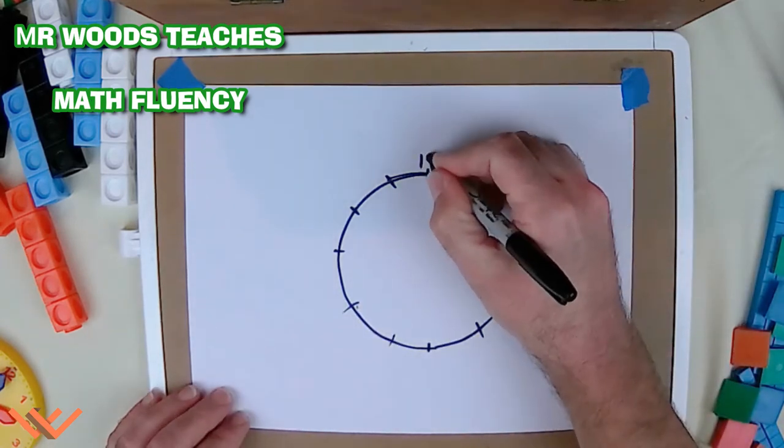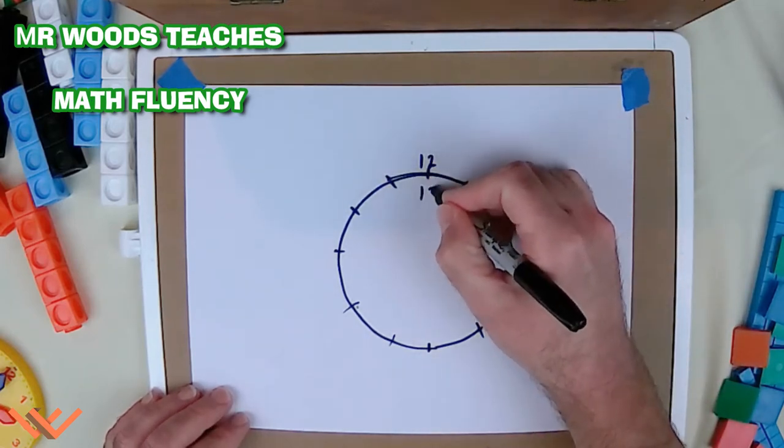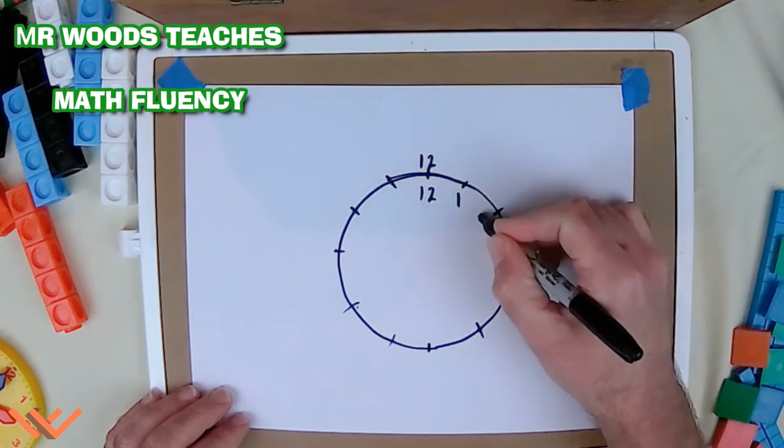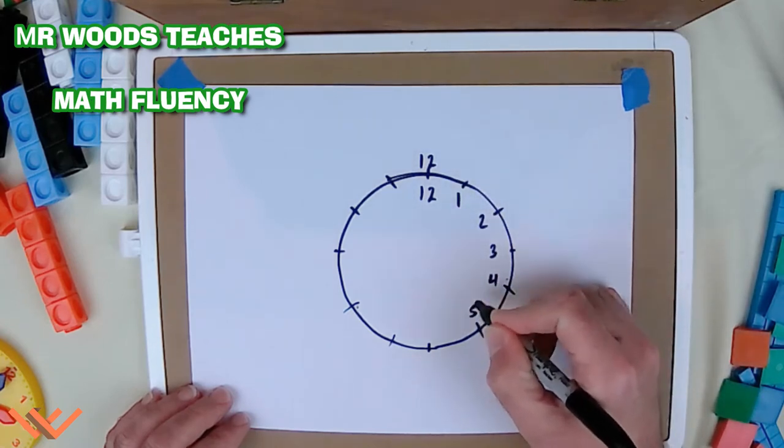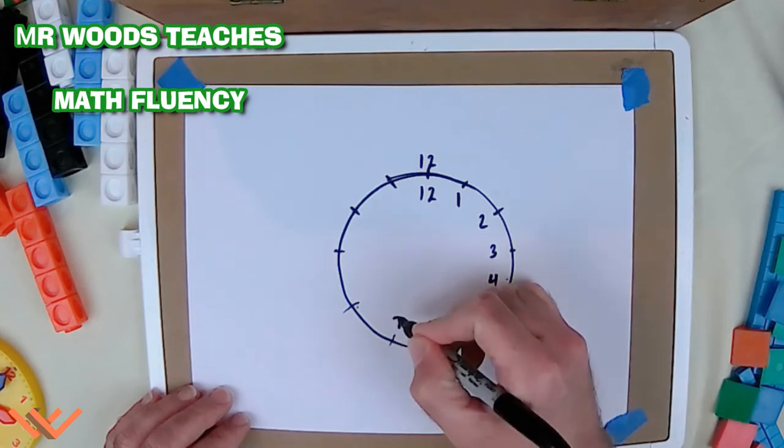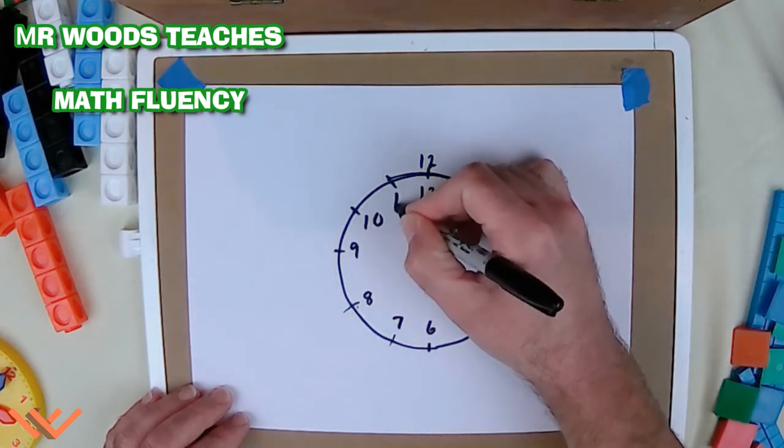I'm just doing approximations here just so that I can get the numbers down. So, I can say this is 12 or I can put it on the inside. Now, 12, 1, 2, 3, 4, 5, 6, 7, 8, 9, 10, and 11.